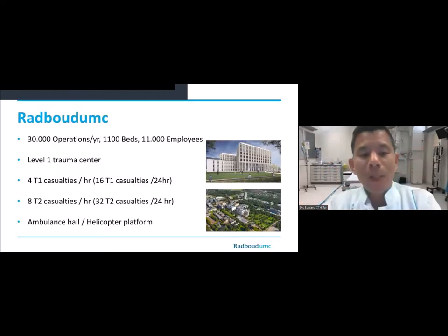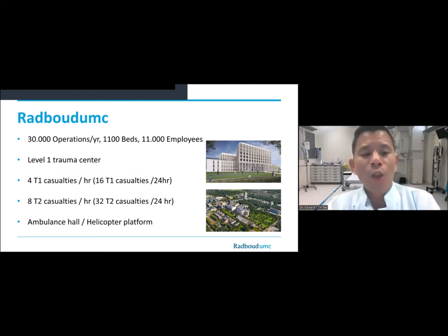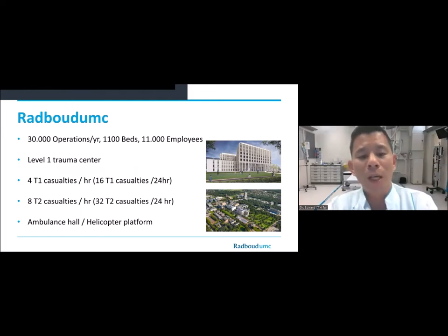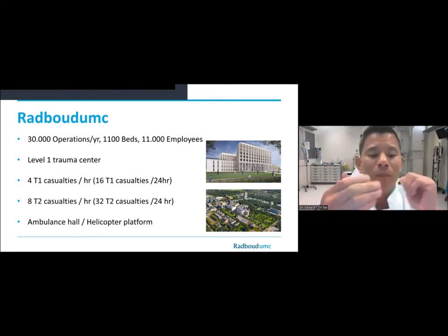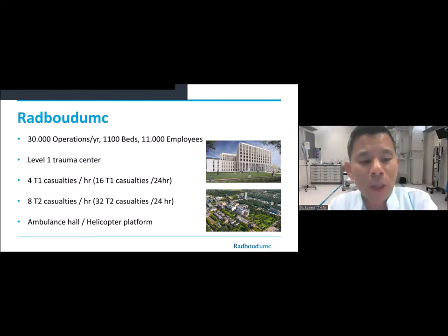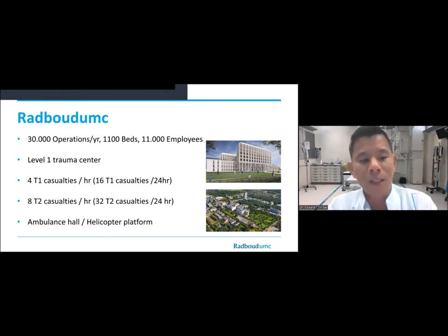Our experience with MASCALs is limited, so how do we prepare as a Level 1 hospital like Radboud? First, you need a crisis management structure. The slides show the actual number of casualties we can receive in one hour, guaranteed T1 or P1. Different countries use the P1 triage method; in the Netherlands, we use the T classification.